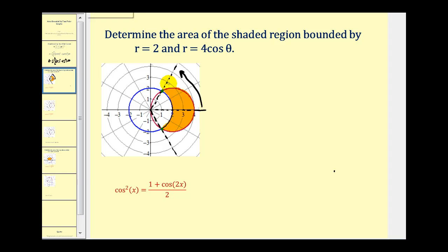Again, we decided to find this area here and then double it to find the total area. So we'll have the area is going to be equal to two times one-half times the definite integral from zero to pi over three of the outer curve squared, which will be four cosine theta squared, minus the inner curve squared, which is two squared d theta.